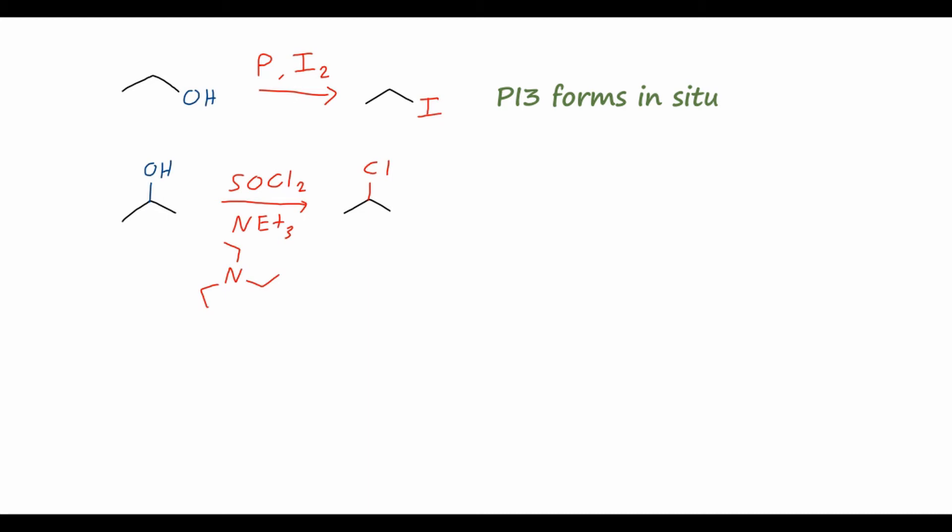So the reaction mechanism is slightly different from the phosphorus reagents. Again, we'll start with our alcohol here. And very similarly to the phosphorus reagents, the lone pairs on the oxygen will attack the sulfur atom here. And then we will kick off one of the chlorine atoms. So in sort of an SN2 process again, to give us a similar adduct.